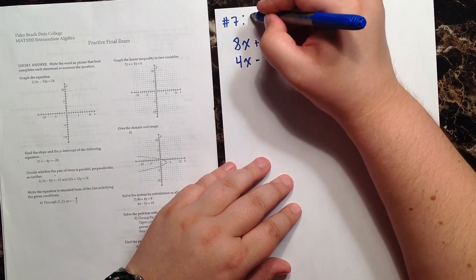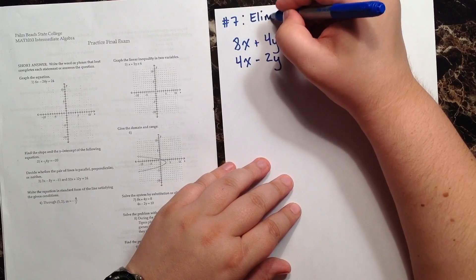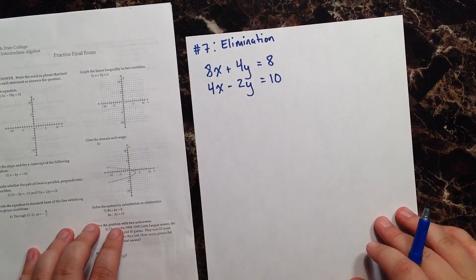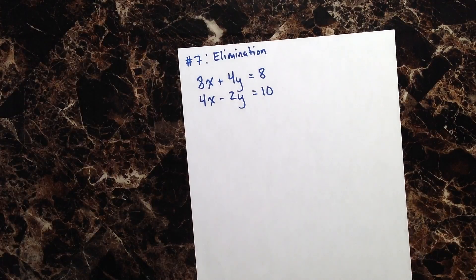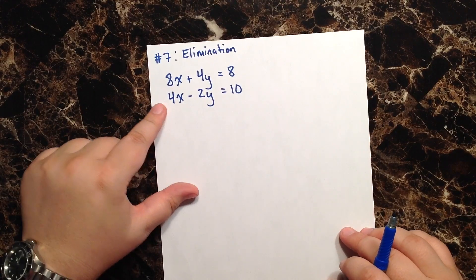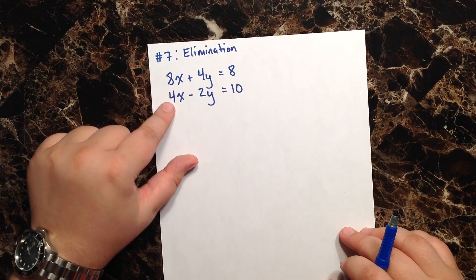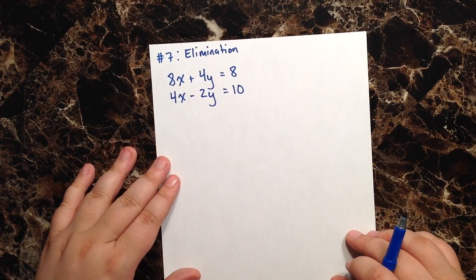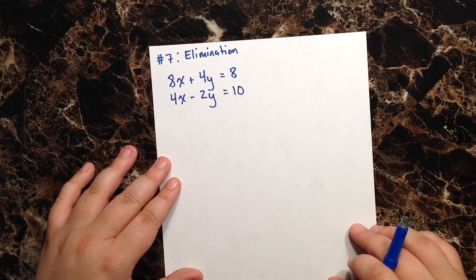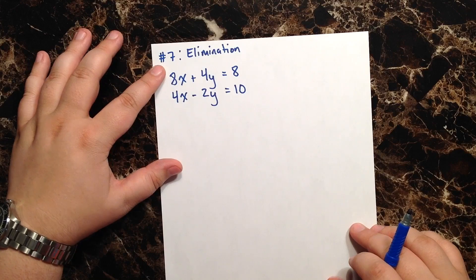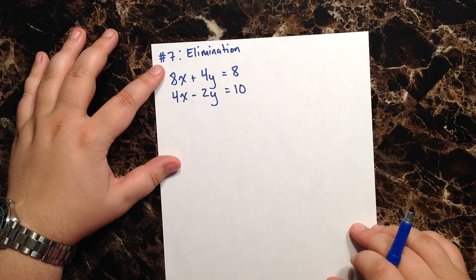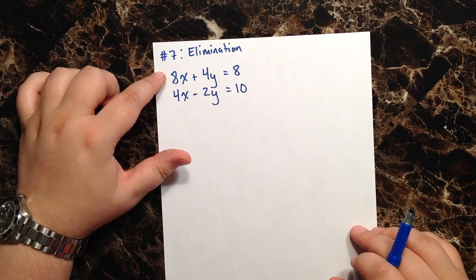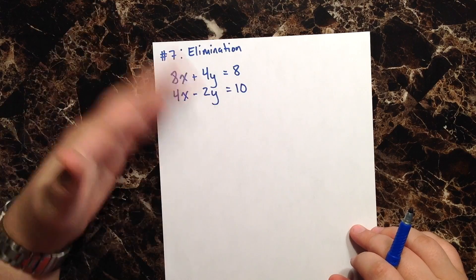Let's go ahead and solve this first by elimination. When we solve by elimination, we look at the given system and decide whether we're going to eliminate the x's or the y's. In order to eliminate a variable, the terms have to be additive inverses — the same number but one positive and one negative, so they cancel each other out.